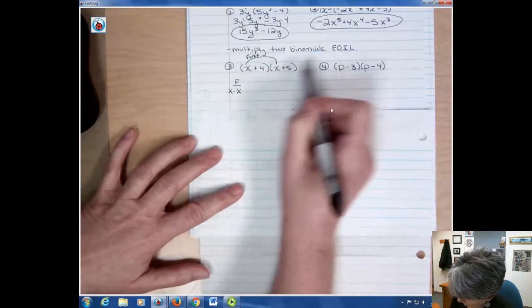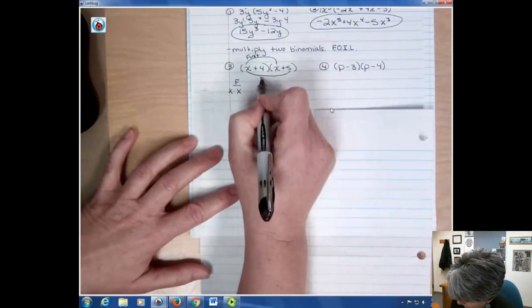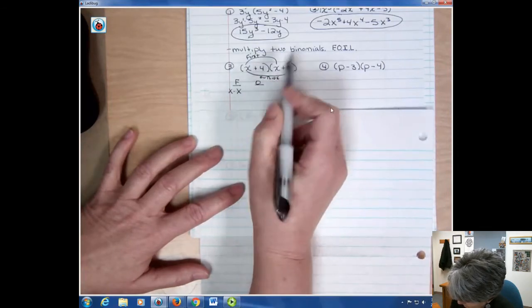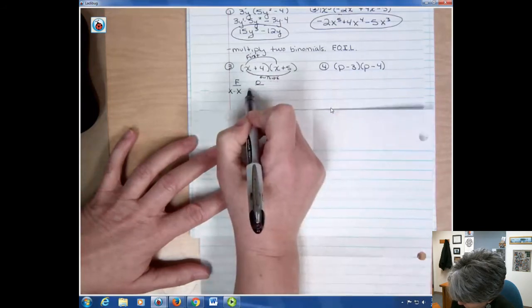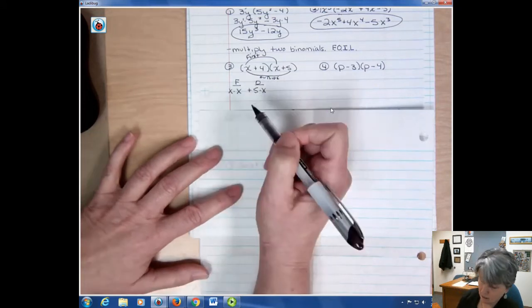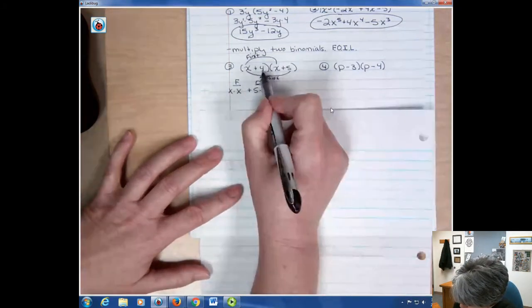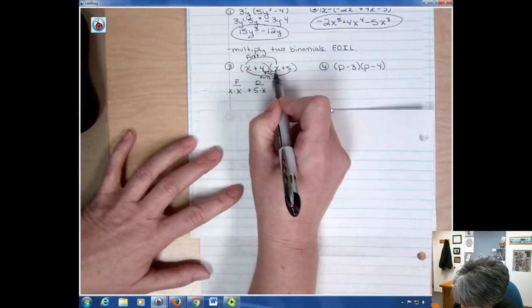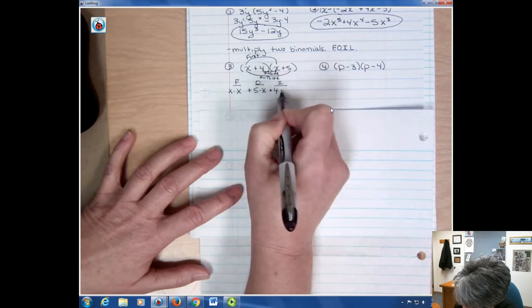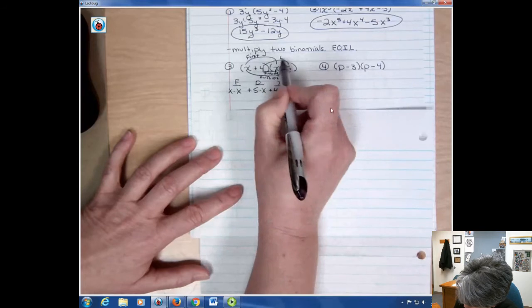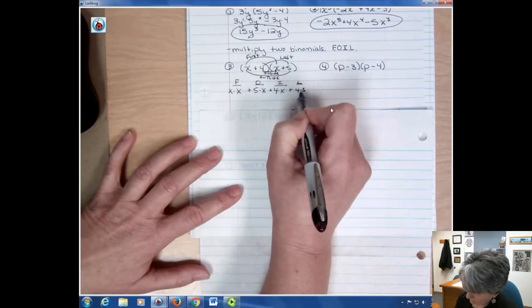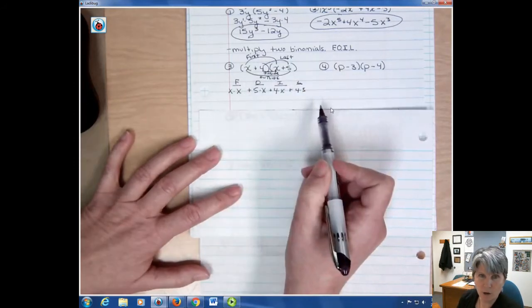The second is outside. The outside terms are these ones that are on the outside of the problem. And that O is going to be x times 5. Then I'll put a plus in between there. If it was a negative, I'd have a negative in there. And then I have the inside. And the inside is 4 times x. And then I have the last. And the last is 4 times 5. So now I just go back and simplify each one of these problems.